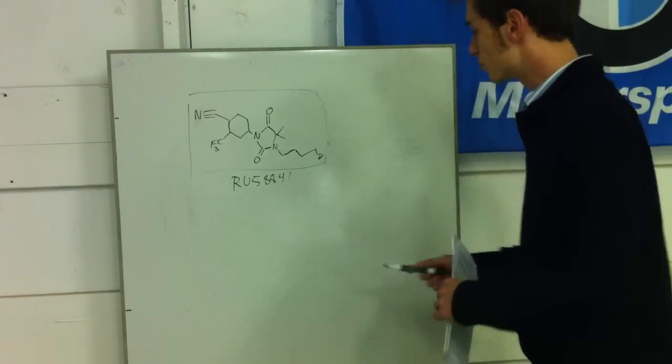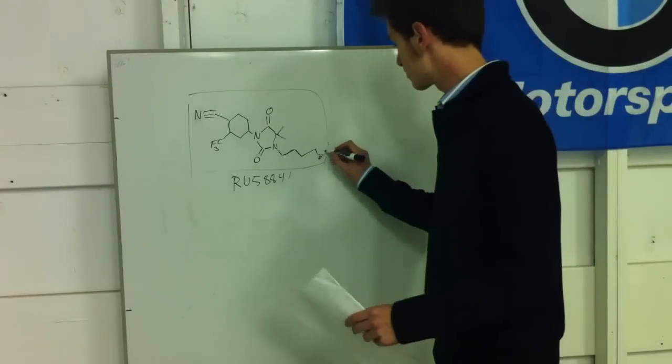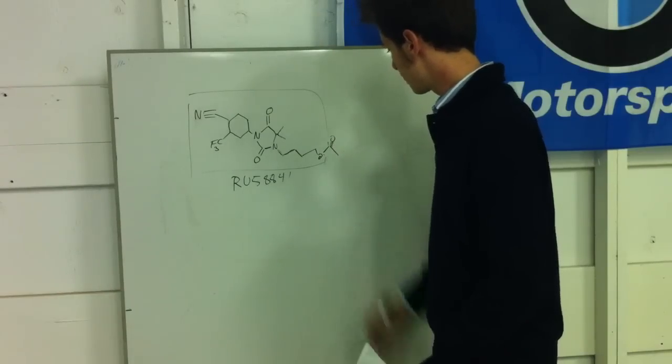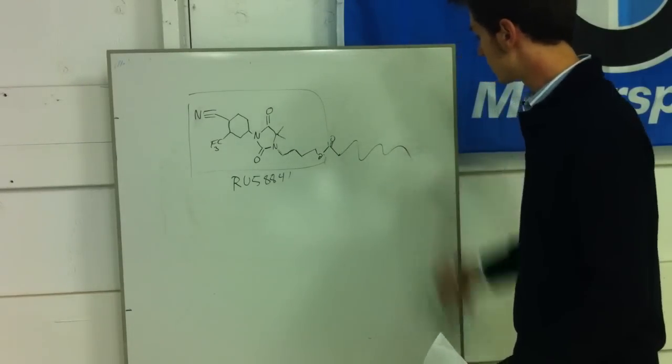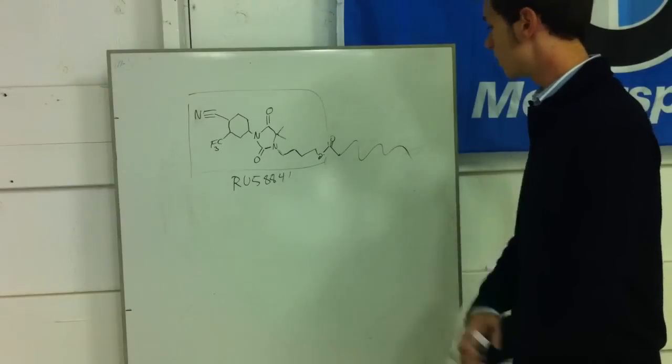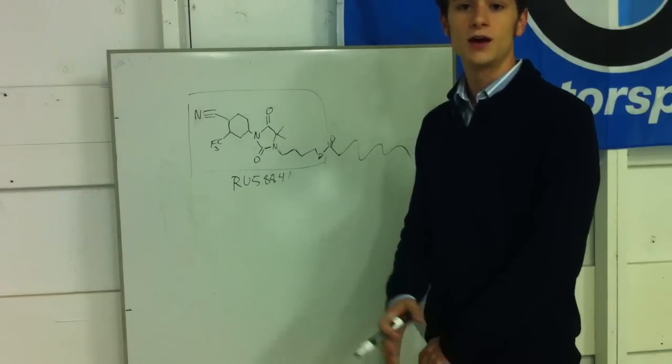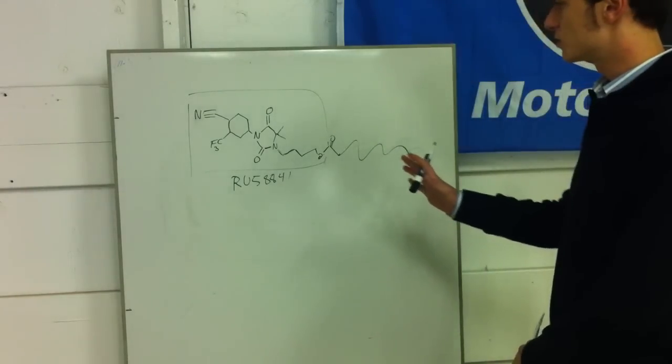So what RUM is, is a prodrug where they, through esterification, have added a hydrocarbon or a long lipid tail so that it is more lipophilic in nature. So that gives it the ability now to more readily be taken up by or through the cell membrane.